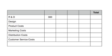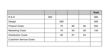All of those costs are going to be incurred in different periods. For life cycle costing, we add up the total costs incurred over the life cycle of the product. Research and development costs: 300 in year one, total 300. Design: 200 in year two, total 200. Product costs begin in year two — 75, 90, and 90 — total 255. Marketing costs are 70, 50, and 30, giving a total of 150. Distribution costs were 20, 27, 24 — total 71. Customer service costs were 15, 23, and 30 — total 68.